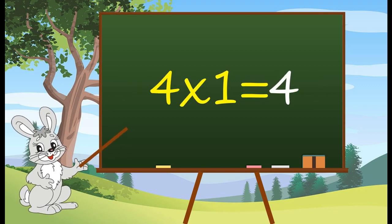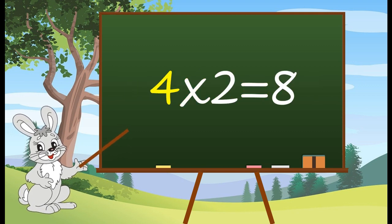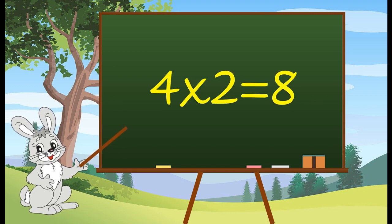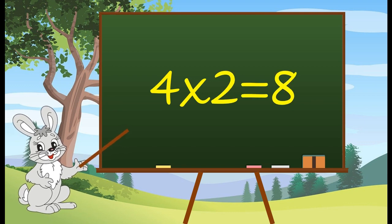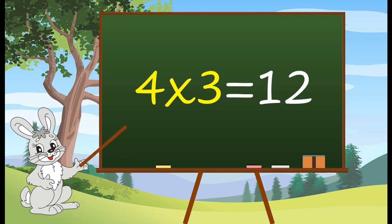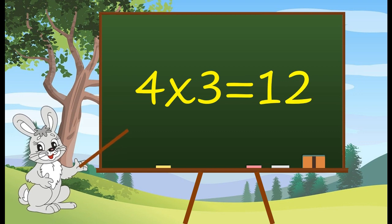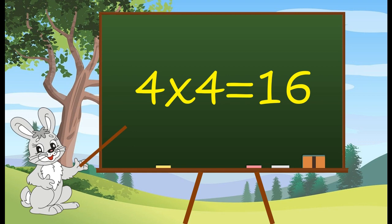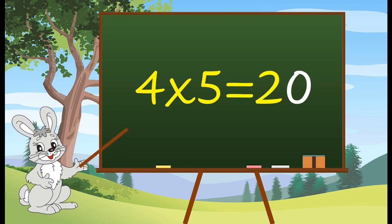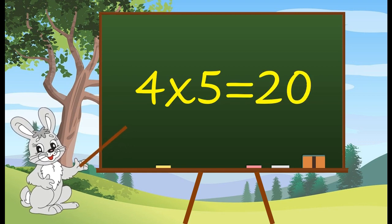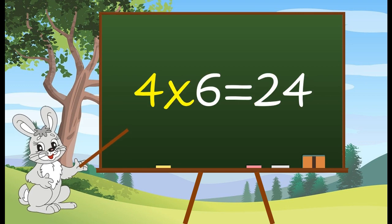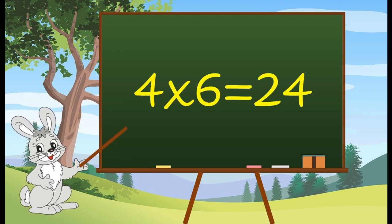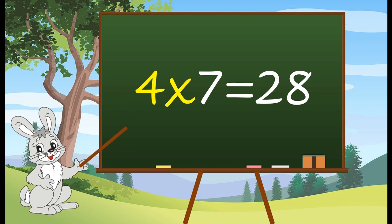Table of 4. 4 1's are 4. 4 2's are 8. 4 3's are 12. 4 4's are 16. 4 5's are 20. 4 6's are 24. 4 7's are 28.